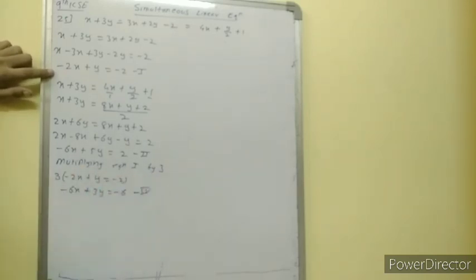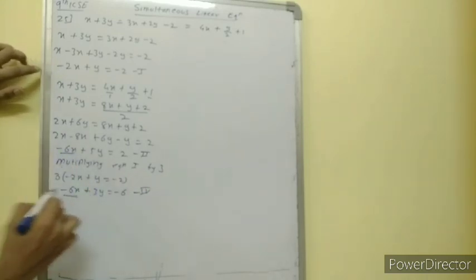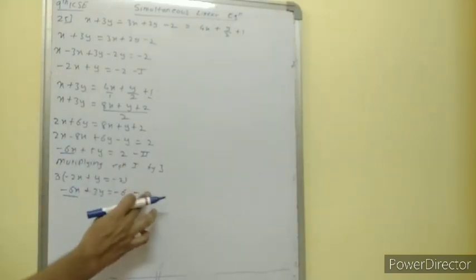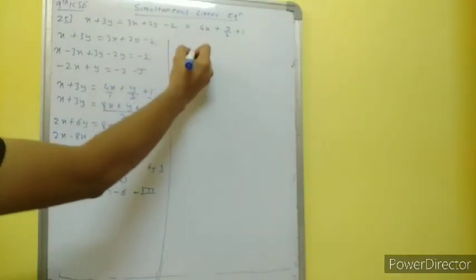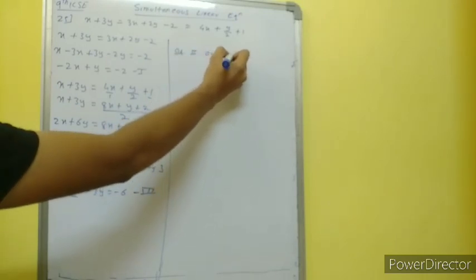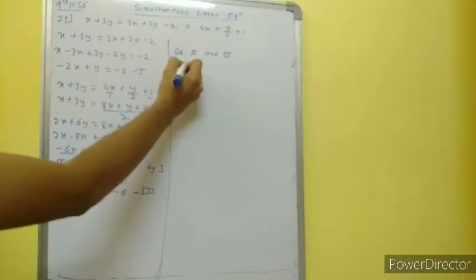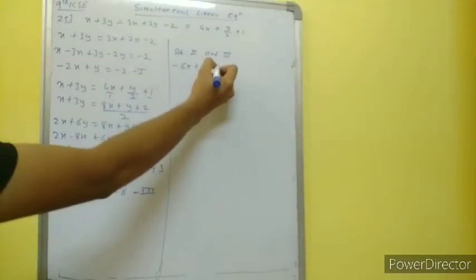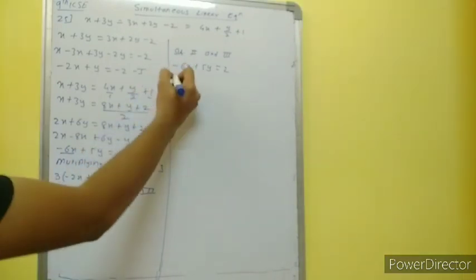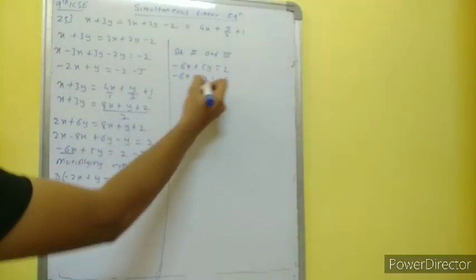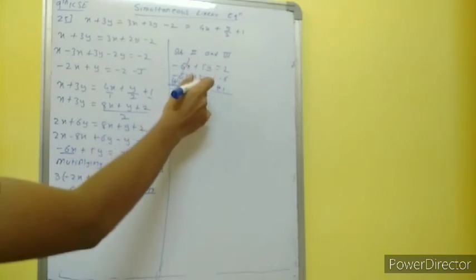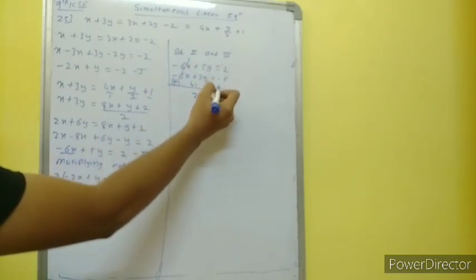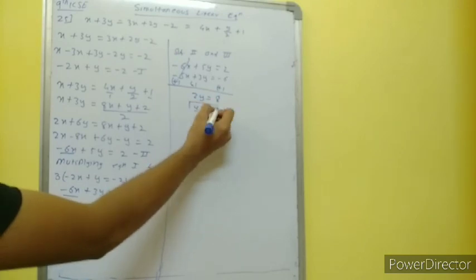Taking first and last equal: x plus 3y is equal to 4x plus y upon 2 plus 1. Multiplying through by 2: 2x plus 6y is equal to 4x plus y plus 2. Rearranging: 2x minus 4x plus 6y minus y is equal to 2, giving minus 6x plus 5y is equal to 2 — equation 2. Now multiplying equation 1 by 3: minus 6x plus 3y is equal to minus 6 — equation 4. Subtracting equations 2 and 4: the minus 6x cancels; 5y minus 3y is 2y; and 2 plus 6 is 8. So y is equal to 4.